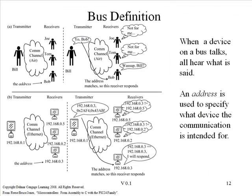The I2C is a bus in its own right, in the sense that each device on the bus has a specific address. As an analogy, every device on the internet has a unique address, which allows you to move data from one computer to another.